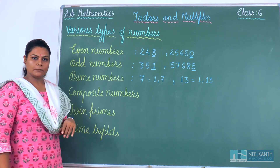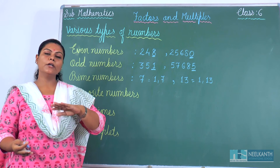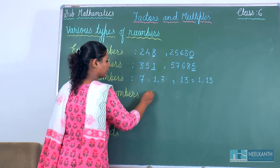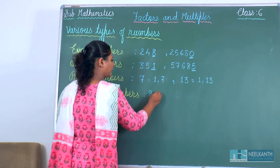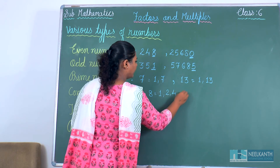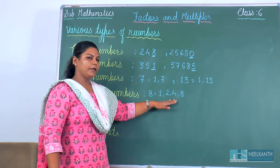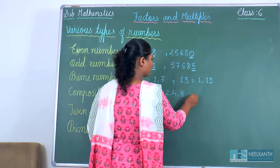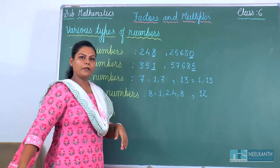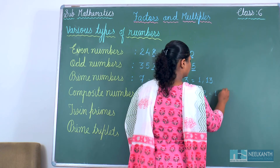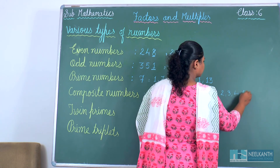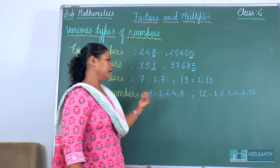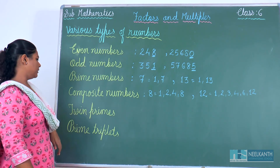Now, what are composite numbers? A number which has more than 2 factors is called a composite number. For example, 8 — the factors of 8 are 1, 2, 4 and 8. You can see the factors of 8 are more than 2, so 8 is called a composite number. Another example: 12 — the factors of 12 are 1, 2, 3, 4, 6 and 12. The factors of 12 are more than 2, so 12 is also called a composite number.